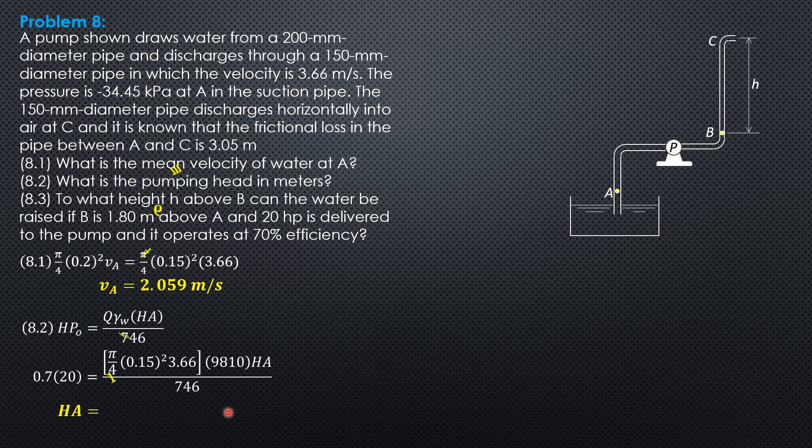We write energy equation between A and C because we know everything about energy items at A and C except for this H here. We select datum through A as the arbitrary datum.